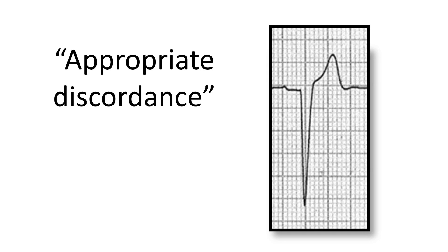This is what we normally see in left bundle branch block. When somebody has a left bundle branch block pattern on the ECG, if they have a negative QRS complex then the ST segment tends to appear elevated. Conversely, if they have a positive QRS complex then the ST segment tends to appear depressed. In other words, there is discordance between the direction of the QRS complex and the direction of the ST segment normally in left bundle branch block.